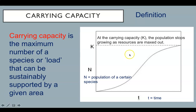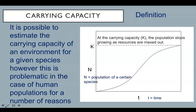At the carrying capacity, K, the population stops growing as resources are maxed out, as illustrated in this graph, where N is the population of a certain species. It is possible to estimate the carrying capacity of an environment for a given species. However, this is problematic in the case of human populations for a number of reasons.